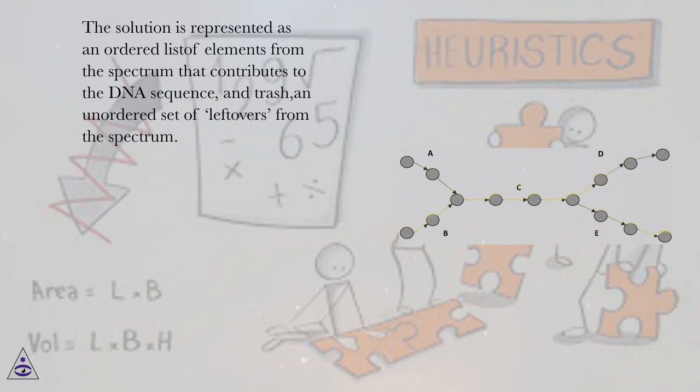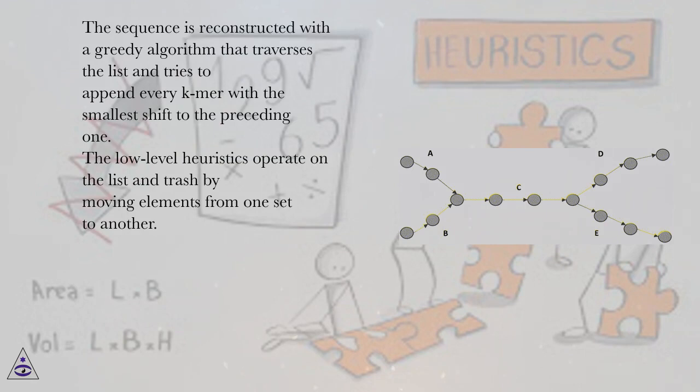The sequence is reconstructed with a greedy algorithm that traverses the list and tries to append every k-mer with the smallest shift to the preceding one. The low-level heuristics operate on the list and trash by moving elements from one set to another.